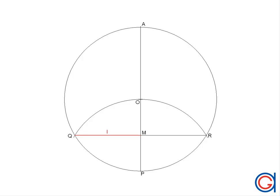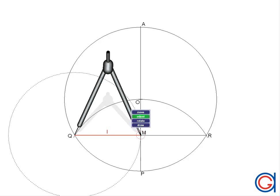Now we already have the length of one side of our heptagon, which is equal to QM or MR.